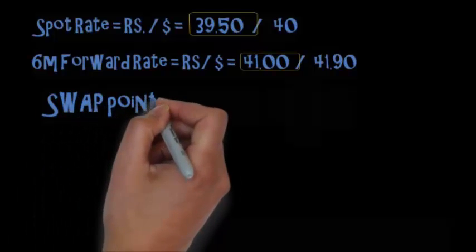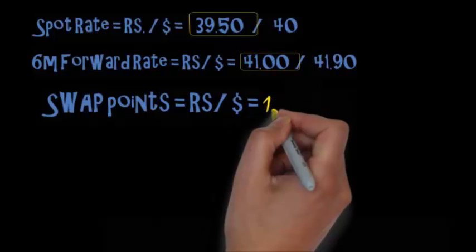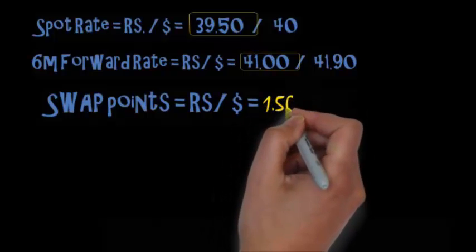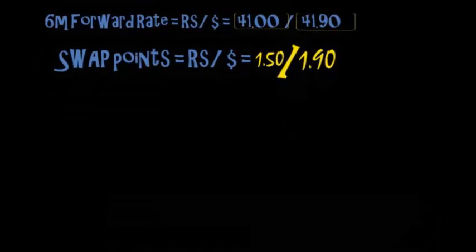Now, it is the difference between forward rate and spot rate. The bid rate will be 41 minus 39.50, and the ask rate will be 41.90 minus 40, that is 1.90.